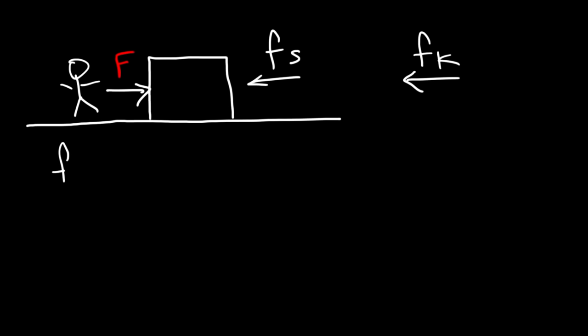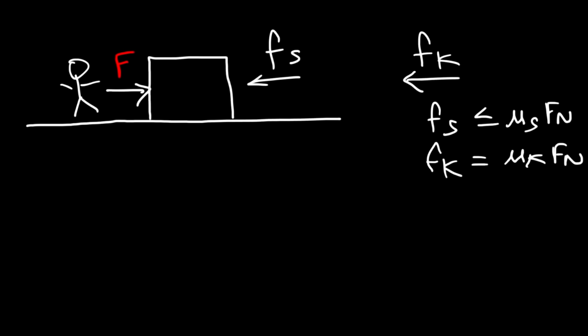Static friction — let me write the equations. Static friction is less than or equal to mu_s times the normal force. Kinetic friction is equal to mu_k times the normal force. Notice that the static frictional force is represented by an inequality, meaning it's not just a fixed number — it can be a range of values up to a maximum point. The kinetic frictional force, however, is not an inequality, so fk represents a fixed number.